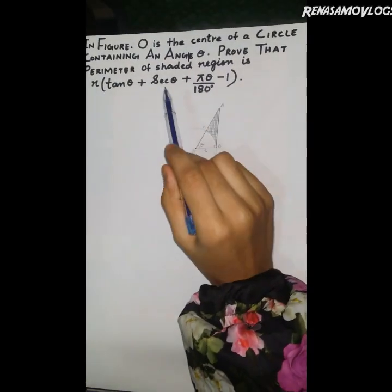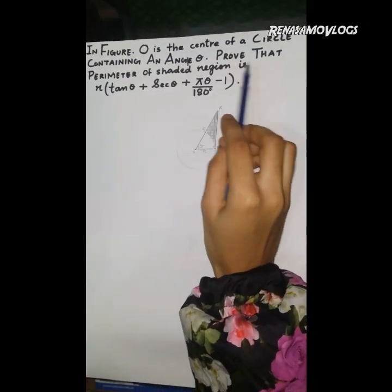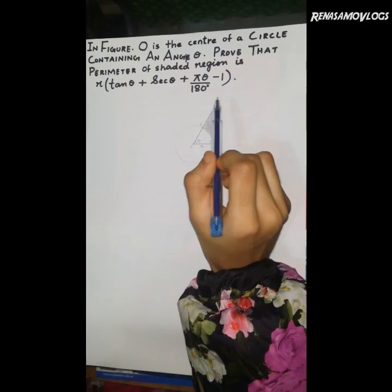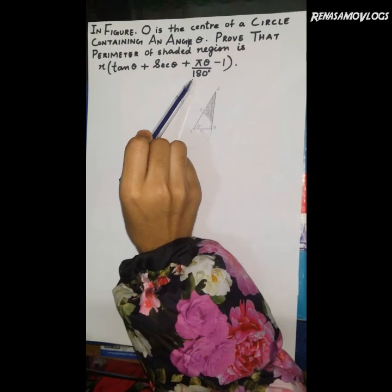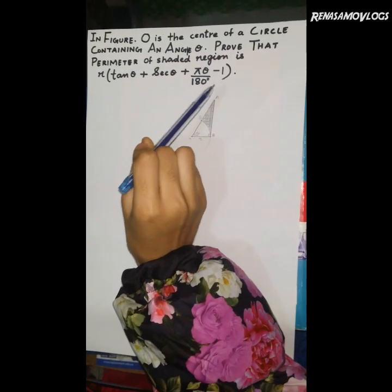O is the center of a circle containing an angle theta. Prove that the perimeter of the shaded region is R times tan theta plus sec theta plus pi theta divided by 180, minus 1.